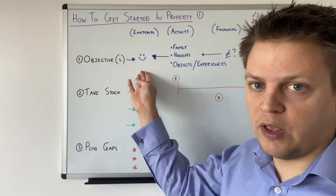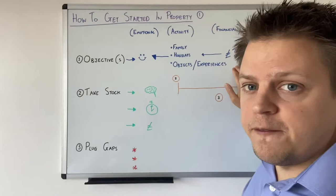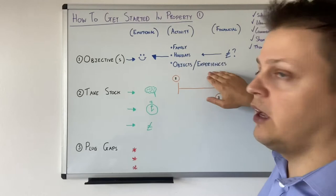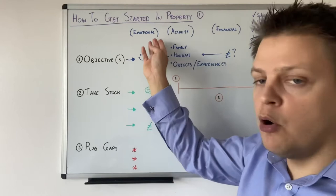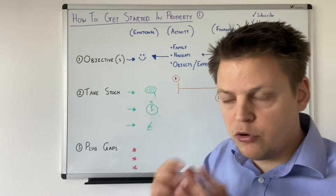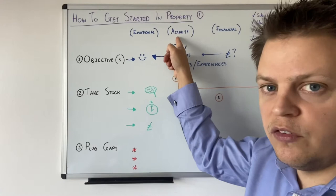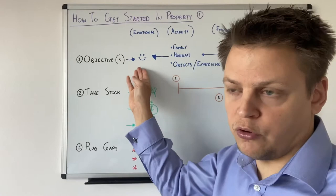Then go one final step back and say: what is the financial outlay required for me to participate in that activity, or to own those objects and have those experiences that will lead me to that emotional state? I call this having an emotional objective that has a financial price tag. What is the finance you need to fund an activity to have an emotional experience? That is what's going to power and drive you in terms of your business. That is number one — your objective, your end goal.